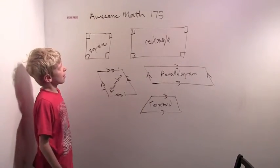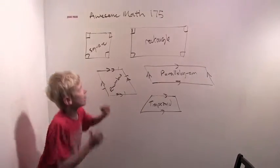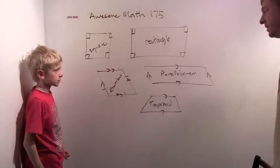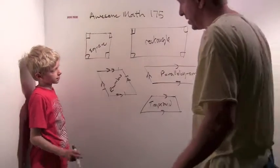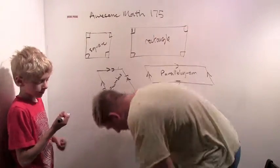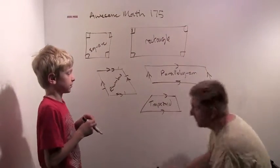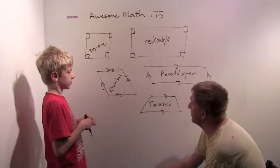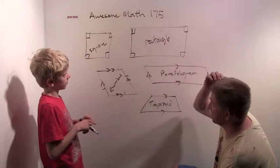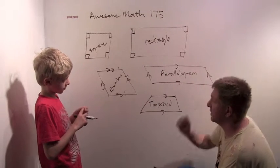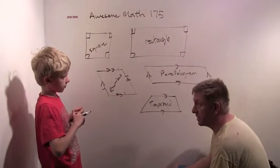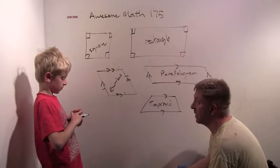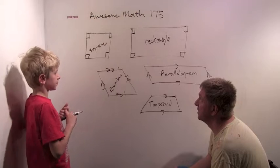Good morning. Welcome to Awesome Ethyl 175. We're going to play a game today called Always, Sometimes, Never. These are five shapes we've just learned about today and yesterday in our section on quadrilaterals.